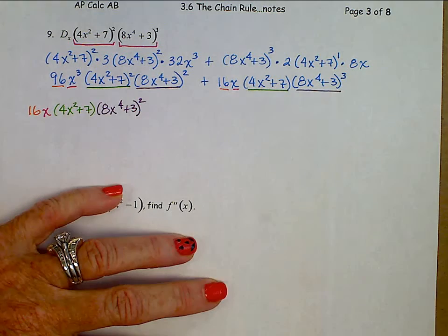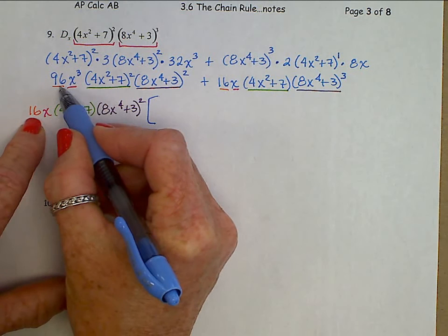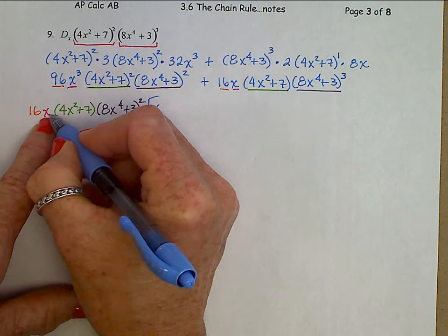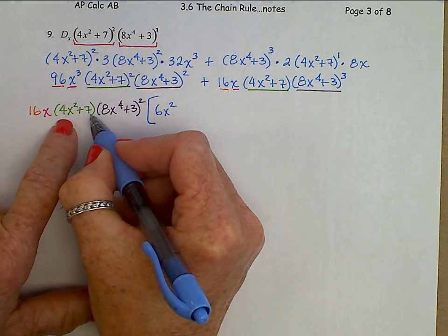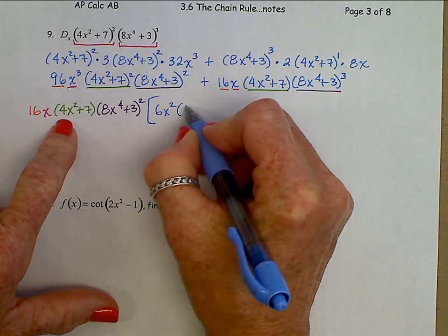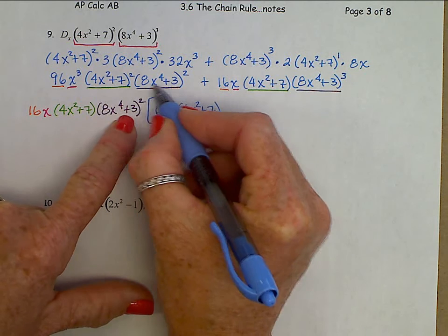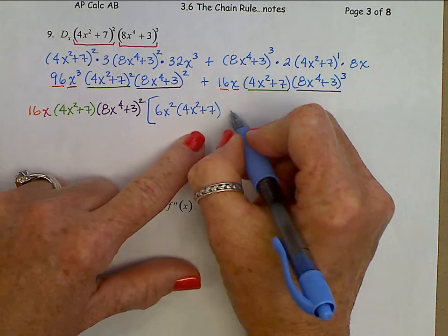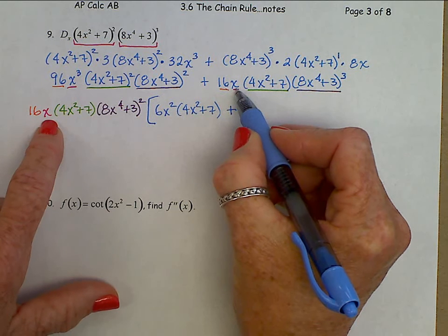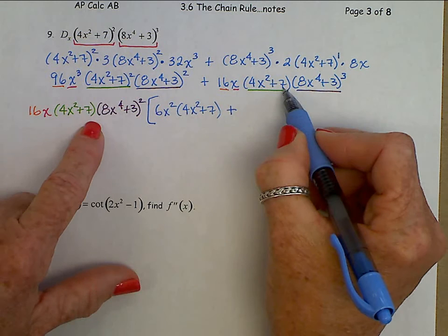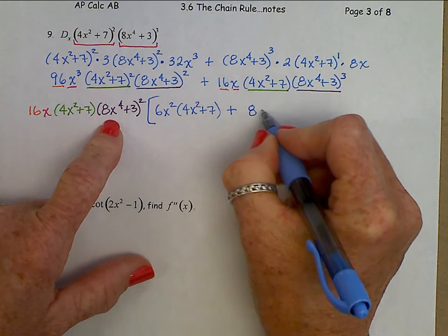Now, what's left? From the first piece: to get from 16 to 96 we need a 6; to get from X to X cubed we need X squared; to get from (4X squared plus 7) to the first to (4X squared plus 7) squared we need another (4X squared plus 7); to get from (8X to the 4th plus 3) squared to (8X to the 4th plus 3) squared, we don't need any. That's the first half. Plus the second half: 16 to 16, none; X to X, none; (4X squared plus 7) to itself, none; (8X to the 4th plus 3) squared to cubed, we need one (8X to the 4th plus 3).